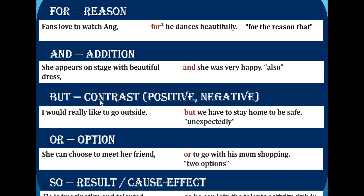BUT is for contrast — it shows positive and negative. Something happened positively and the other thing negatively. Example: 'I would really like to go outside, but we have to stay home to be safe.' It is unexpected — it is the opposite. I gave two situations that are opposite of each other. I would like to go outside, but something unexpected happened that didn't allow me to go.